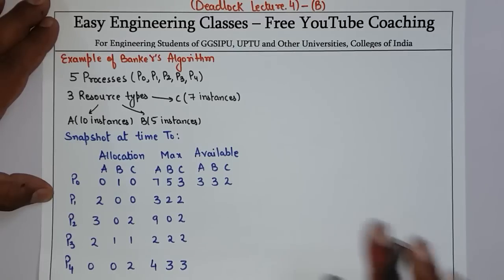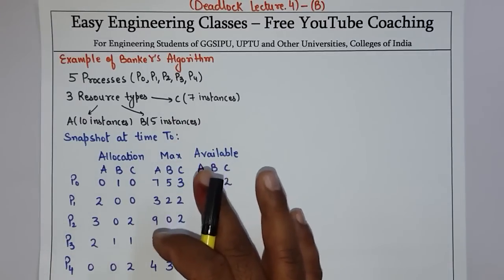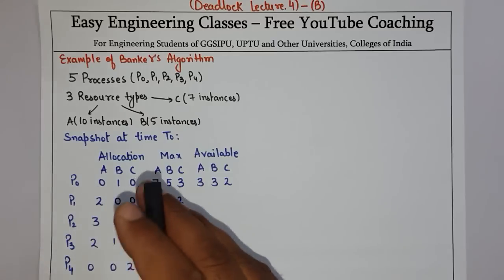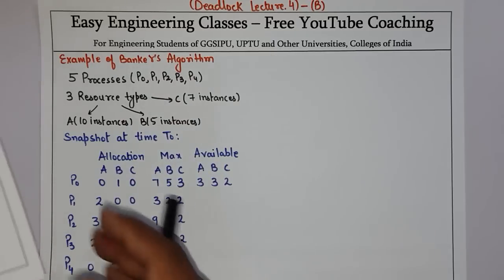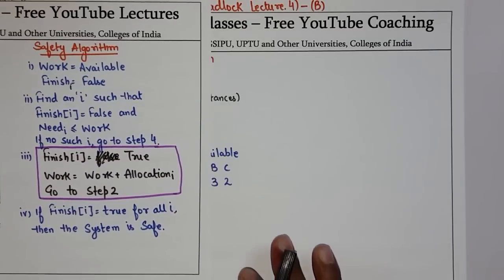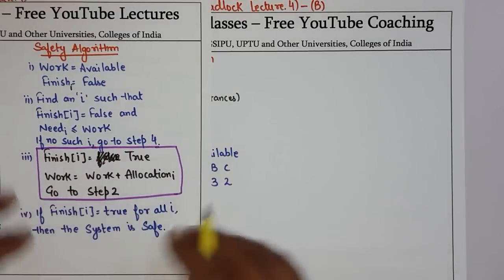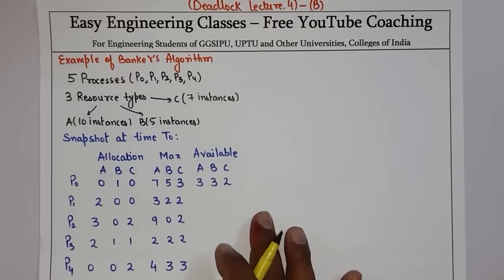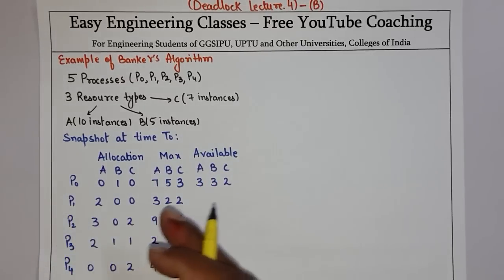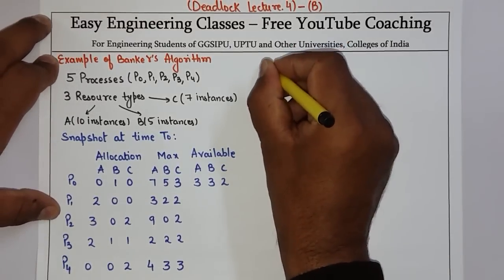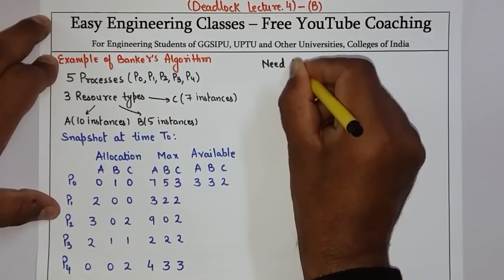We are going to check whether the system is in a safe state. To do this, we have to use the Safety Algorithm. So now we will start working with this. The first step is to create a Need Matrix, and the Need Matrix is calculated as Max minus Allocation. So the first step is to draw the Need Matrix.